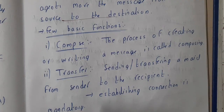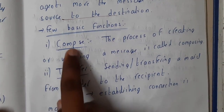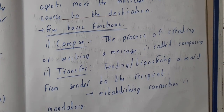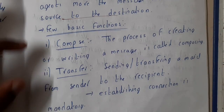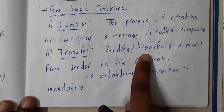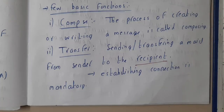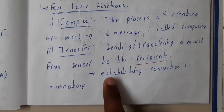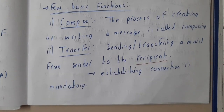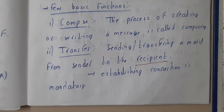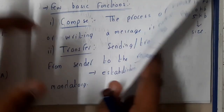Now let's go through some basic functionalities of email. The first is compose — the process of creating or writing a message. Transfer is sending the mail from sender to recipient, where recipient simply means the receiver, the person you are sending to. Establishing connection means knowing the recipient's email ID and having internet connectivity so you know where to send the message.